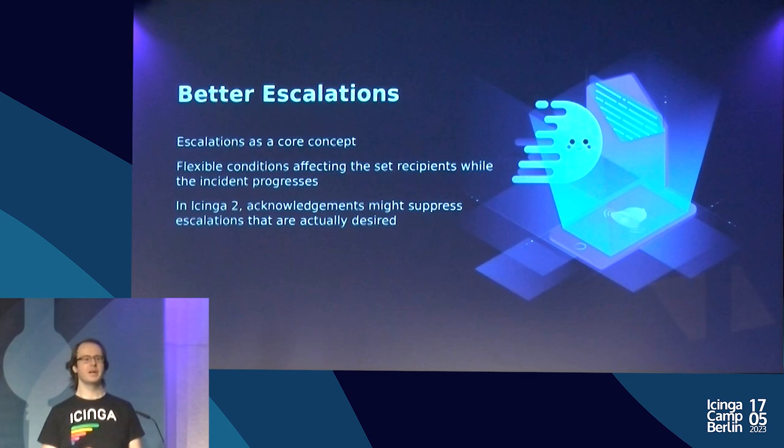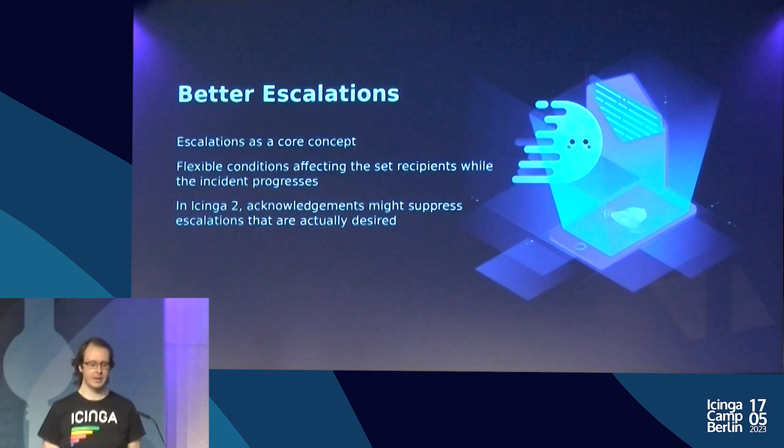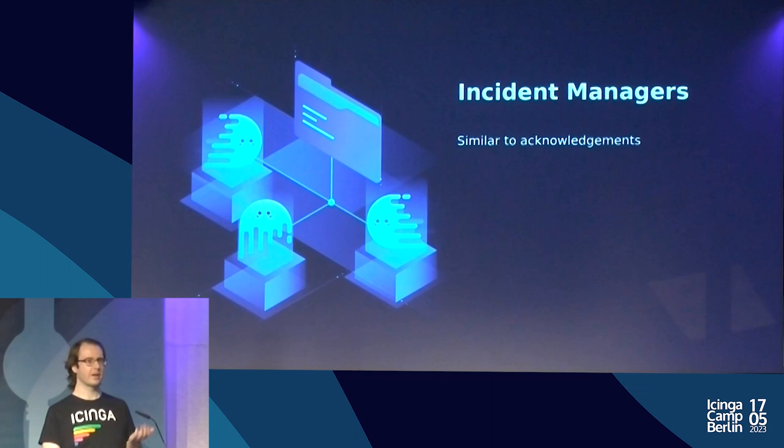In Icinga 2, acknowledgements are a bit problematic when building escalations. You can acknowledge a service and this suppresses all notifications. So if you have a notification set to trigger after three hours and it was acknowledged without an expiry time, that notification never gets sent, and the problem may be forgotten even if it shouldn't be. We're trying to change this.